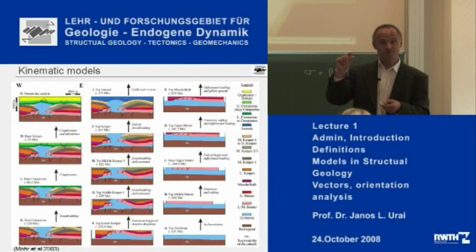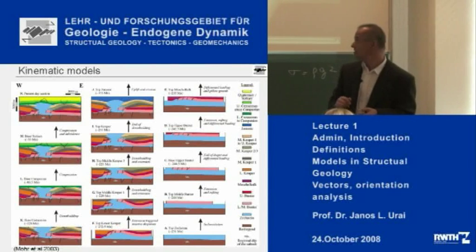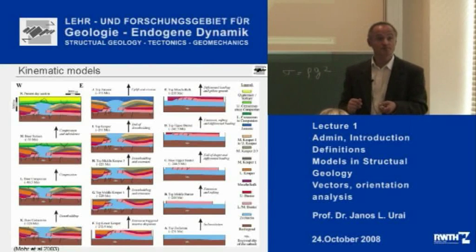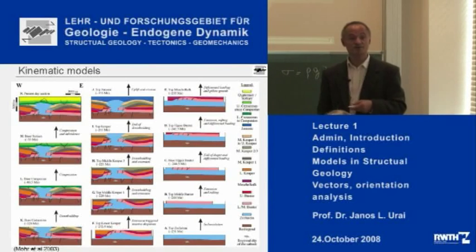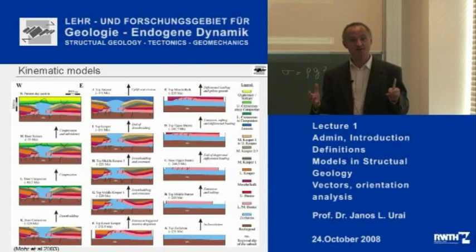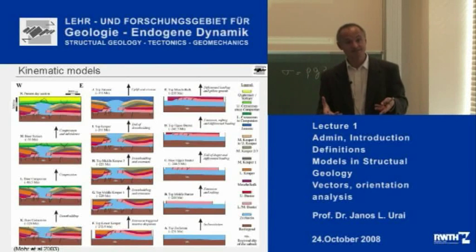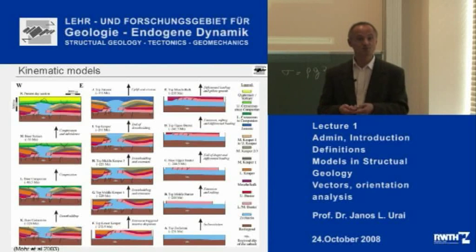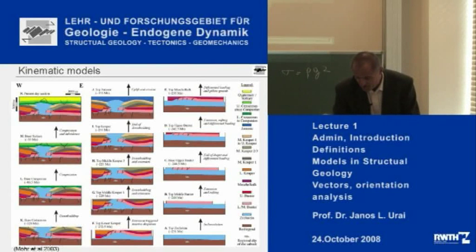It's very important in the scaled experiment to know how the equations for scaling work, and it's very important to make sure that the scaling ratios are correct. But then you can really do amazing things. This model, published in a very high quality international journal, really reproduces many of the aspects present in grabens that you can see in Iceland, in Djibouti, or at the mid-oceanic ridges.